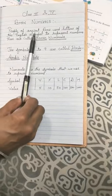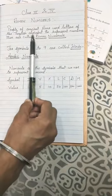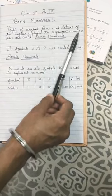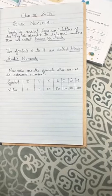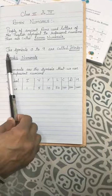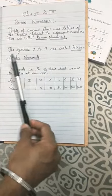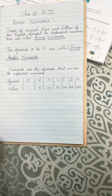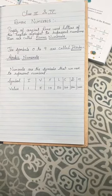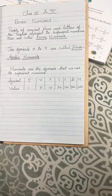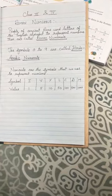People of ancient Rome used letters of the English alphabet to represent numbers. These are called Roman numerals. The symbols 0 to 9 — that is 1, 2, 3, 4, 5, 6, 7, 8, 9 — are called Hindu Arabic numerals.